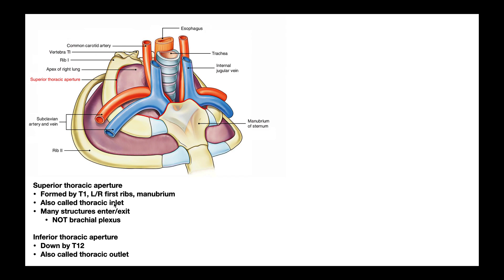There are many structures that enter or exit through this inlet. For example, the esophagus goes vertically through the thoracic inlet, and the trachea goes vertically through it as well. If we think about structures coming directly off of the heart within the thorax, here we have the brachiocephalic vein, and behind that is the brachiocephalic artery, which divides into the common carotid artery going up.